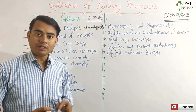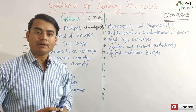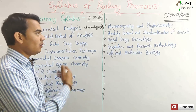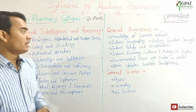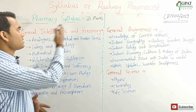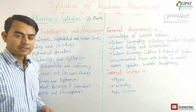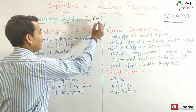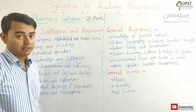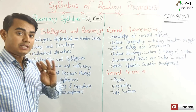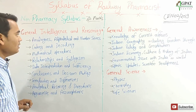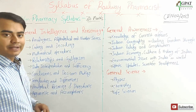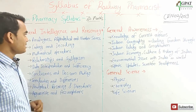Now the Non-Pharma syllabus. This will cover a total of 30 marks — 30 questions, each question carrying 1 mark. This non-pharma syllabus is divided into three parts: General Intelligence and Reasoning, General Awareness, and General Science.